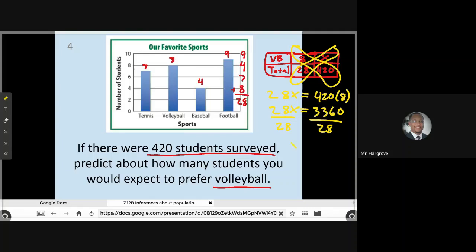I'm then going to divide both sides by 28. And when I do that, it leaves me with x equals 120 total students that preferred volleyball. That's our prediction. If they surveyed 420 students, 120 of those students would prefer volleyball as their favorite sport.